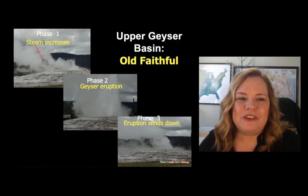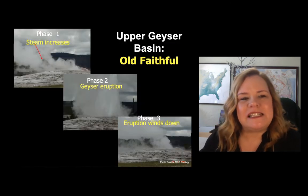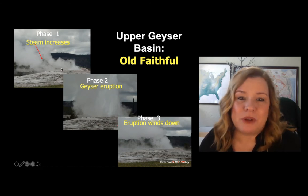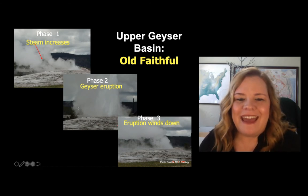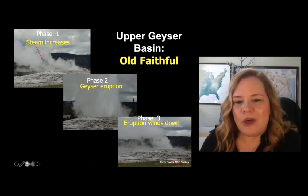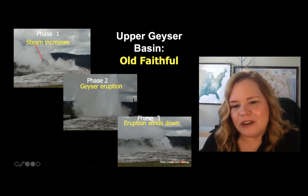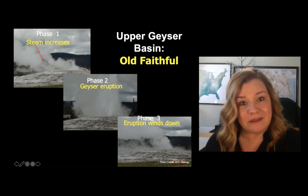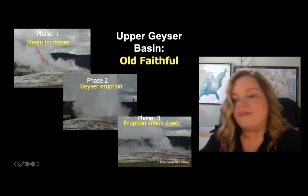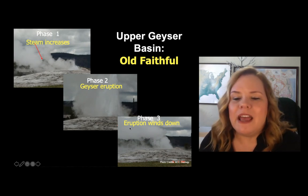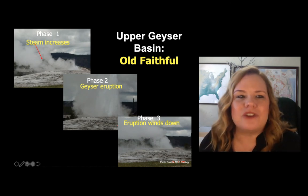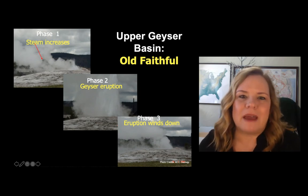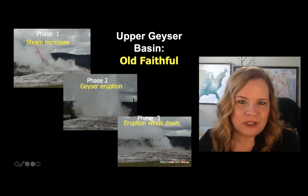Showing some phases: you can see the steam phase increasing — it steams 24/7. Then you see the water coming out, the water going back down into the reservoir. Surface water runoff occurs, then it starts phase one again and continues to steam. The closer you get to that eruption time, the more the steam increases.